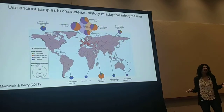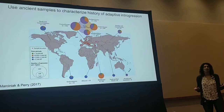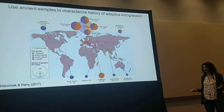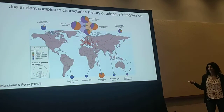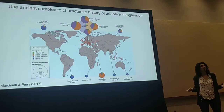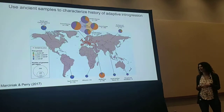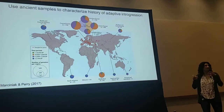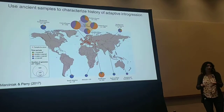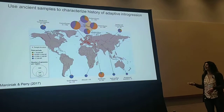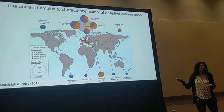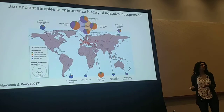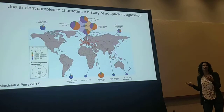What's really exciting is that we can use ancient samples to actually observe the time course of adaptive introgression. As indicated in this figure, there are over a thousand ancient genomes that have been sequenced for modern humans. Most of those genomes have been sampled from Europe, and so today I'll focus on the history of adaptive introgression in Europe.